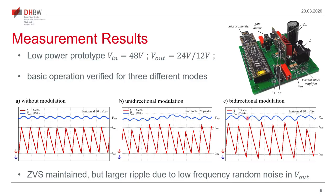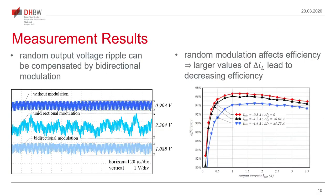Another measurement result shows a comparison of output voltage variations for no modulation, unidirectional modulation, and bidirectional modulation in a single diagram. Unidirectional modulation leads to a large increase in low-frequency ripple amplitude — about two and a half times larger than without modulation. With bidirectional modulation we get only a slight increase. Therefore, low-frequency output voltage variations caused by random changes in switching thresholds can be compensated by the bidirectional modulation scheme.